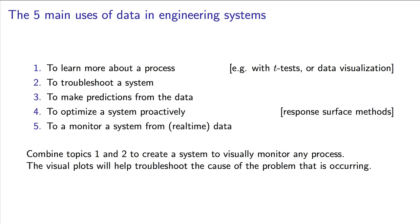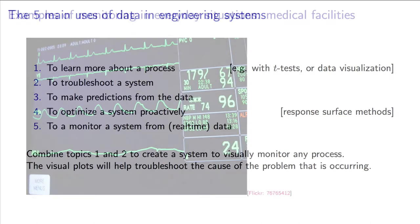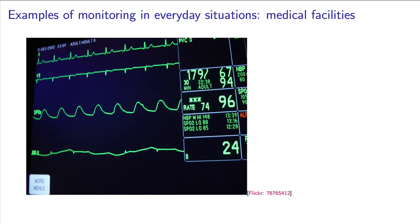Let's start with a few monitoring examples that you've seen before. The first is that of a hospital. We've all seen this on TV, where a patient is being monitored for various vital signs, such as heart beat, blood pressure, oxygen level, blood glucose level, body temperature. These are all parameters that now go into hospital databases to track patients in real time.